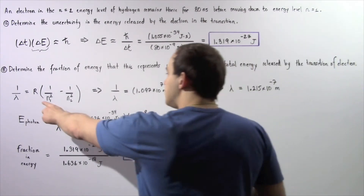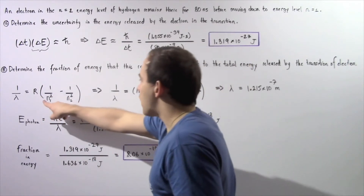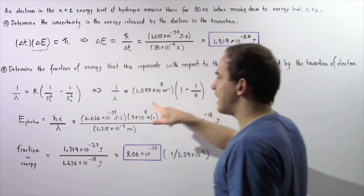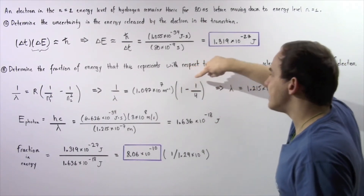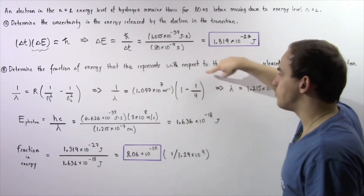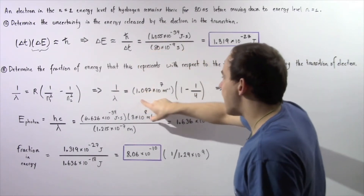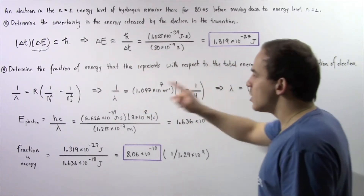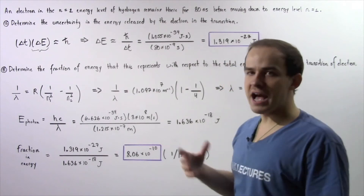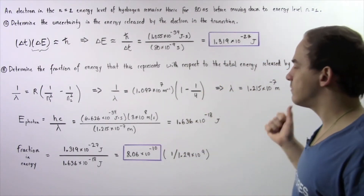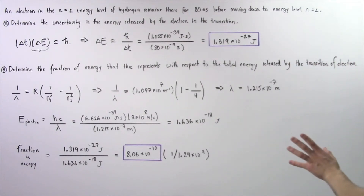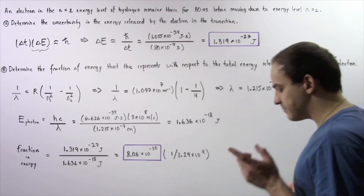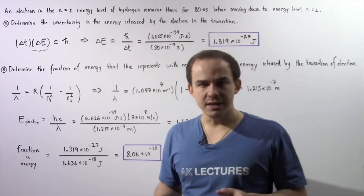Plugging in our values: n1 equals 1, and n2 squared equals 4. So 1 minus 0.25 gives us 0.75. Multiplying by the Rydberg constant, 1.097 times 10 to the 7 inverse meters, and solving for the wavelength gives approximately 1.215 times 10 to the negative 7 meters.